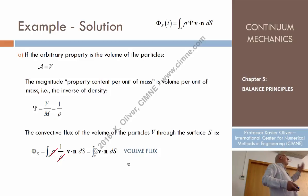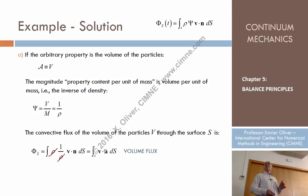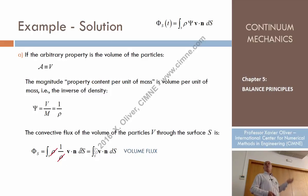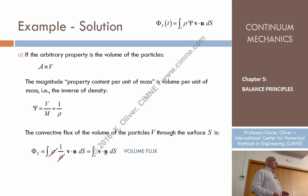Now we can understand what caudal is and how it is computed: the velocity times the normal. To simplify, if the normal and the velocity have the same sense, that becomes velocity times the normal times the surface area. But if the surface is curved or the velocity is not uniform, you must use the integral to compute the caudal, the volume flux. That is nothing else than the convective flux of volume.